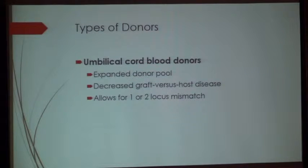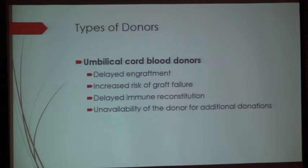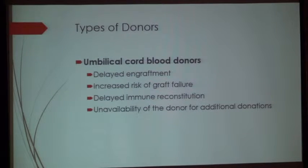Umbilical cord blood donors were once considered the coming hope and are now one of several donor types. They are characterized by an extended donor pool, decreased graft-versus-host disease, and allow for one or two locus mismatches. However, they have problems with delayed engraftment, increased risk of graft failure, delayed immune reconstitution, and unavailability of the donor for any additional donation, such as giving a T-cell or booster dose to the patient.